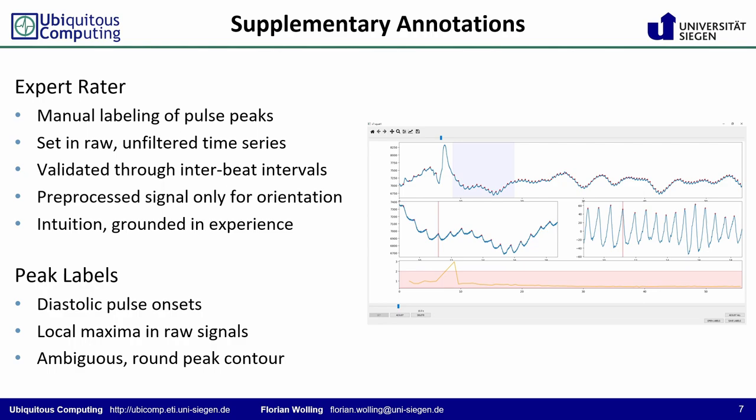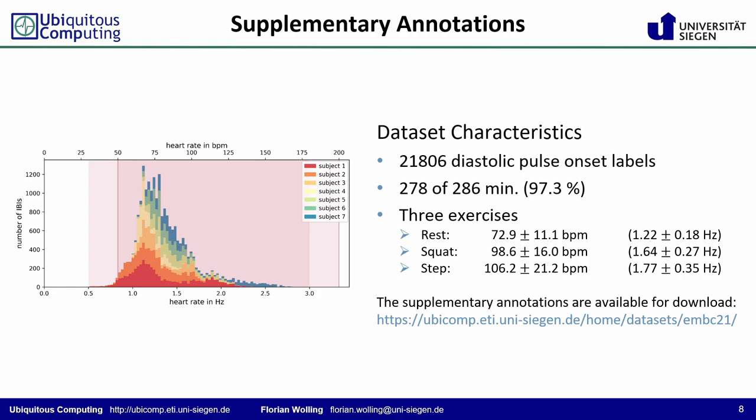Remaining inaccuracies due to imperfect label placement are statistically compensated through the large number of peaks. In total, the expert rater manually set and validated 21,806 labels. The annotations cover 97% of the dataset, so 278 of the original 286 minutes. On the left, you can see the distribution of the instantaneous heart rates — the reciprocal of the individual inter-beat intervals. The performed activities increase the average heart rate from about 73 beats per minute at rest to 106 beats per minute on the stepper, and the standard deviation between subjects increases as well.